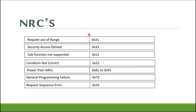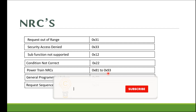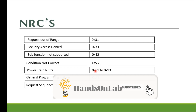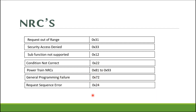Here you can see the possible negative response codes (NRCs) for routine control. These include: Request Out of Range, Security Access Denied — depending on OEM or supplier requirement — Sub-Function Not Supported, and Condition Not Correct, which occurs when a precondition is not satisfied. There are also NRCs like 0x81 for engine speed and vehicle speed conditions. Refer to the diagnostic control specification for details.